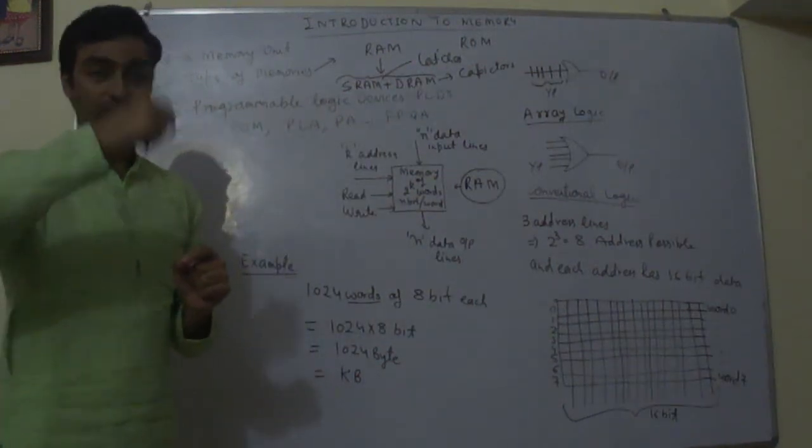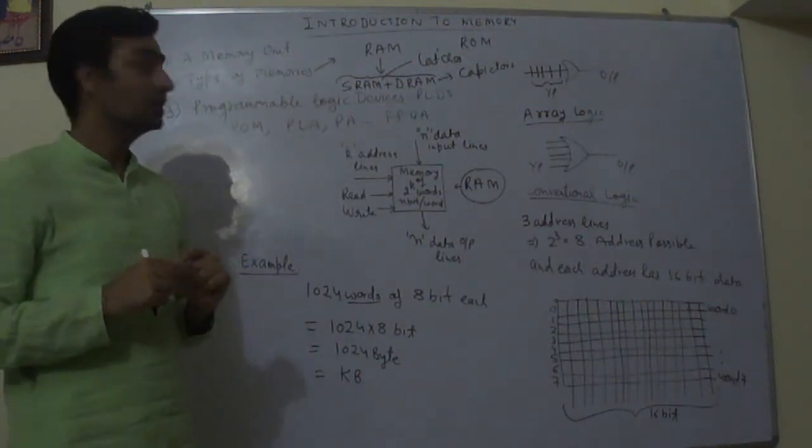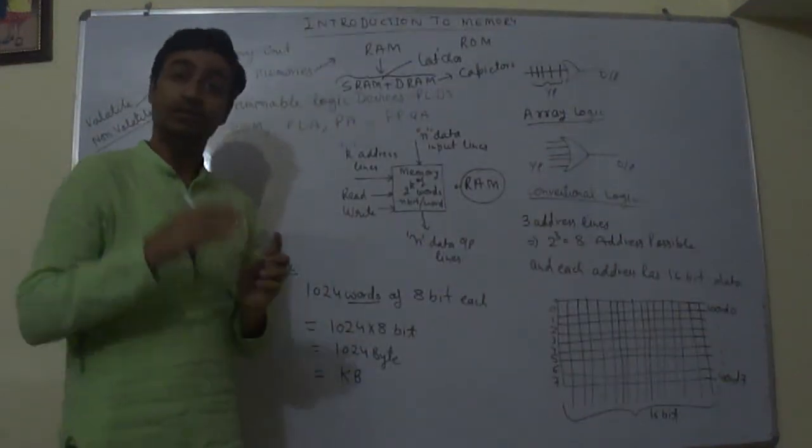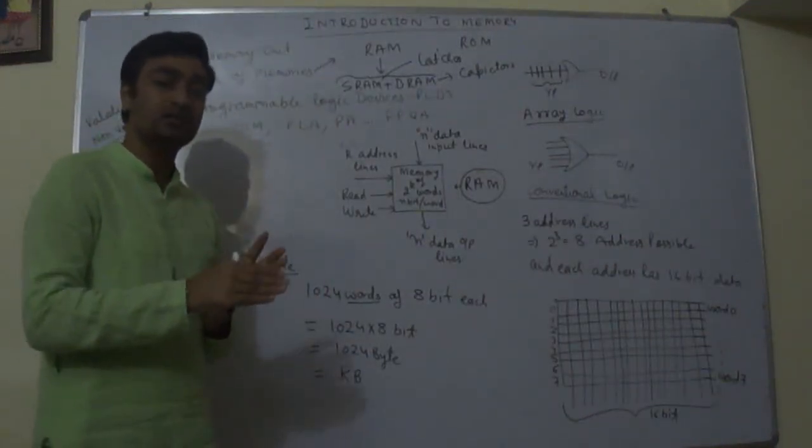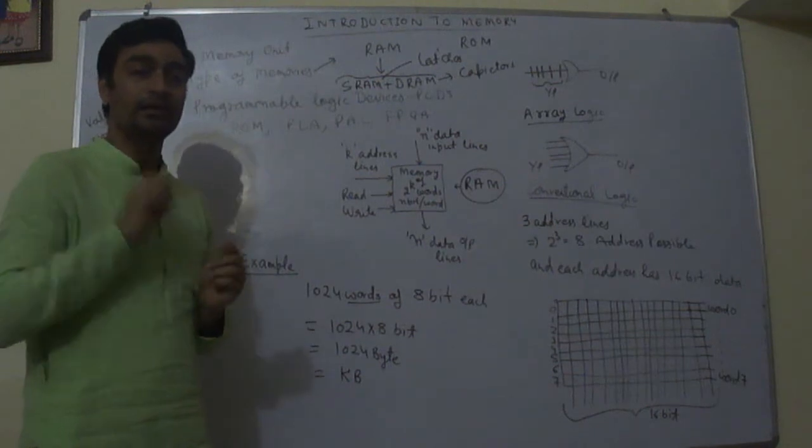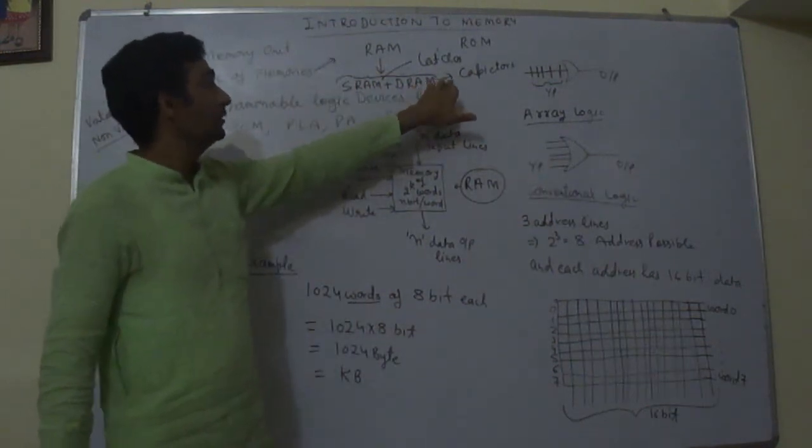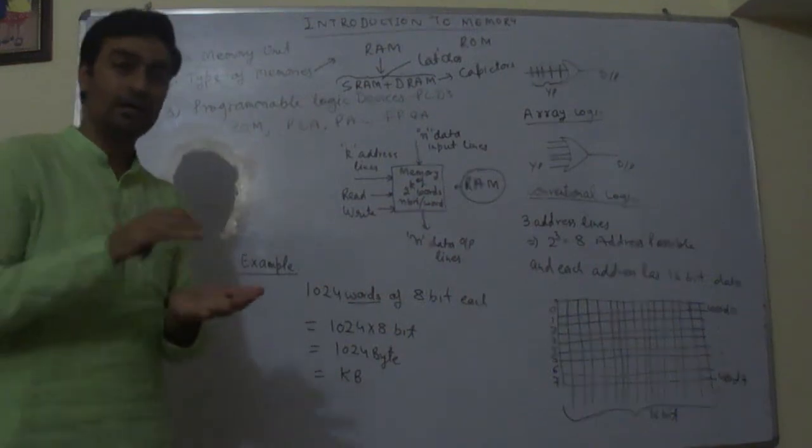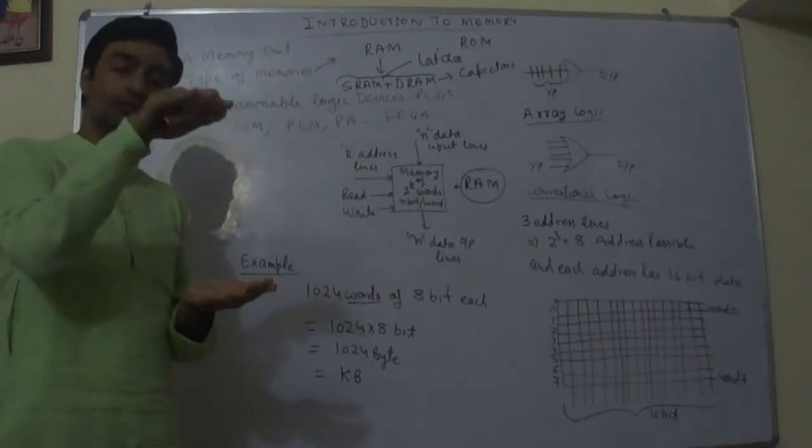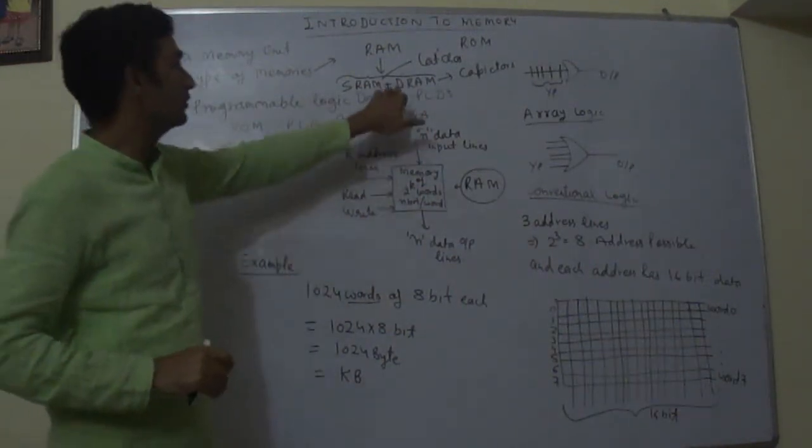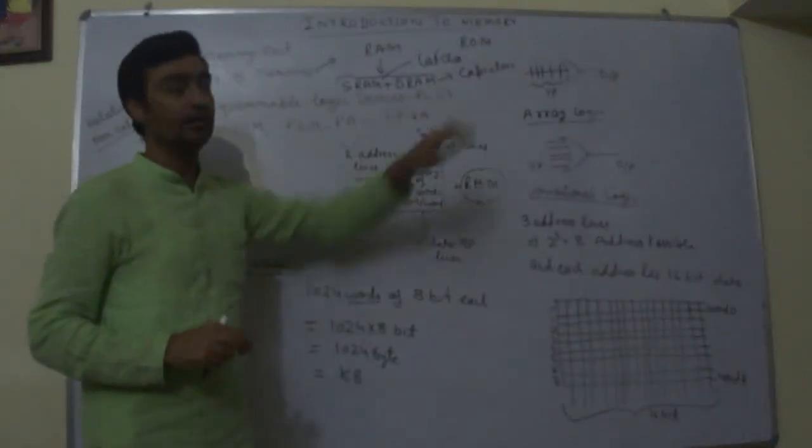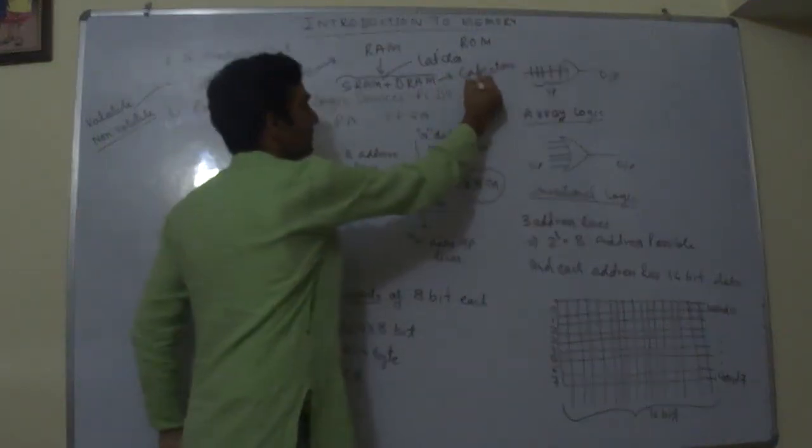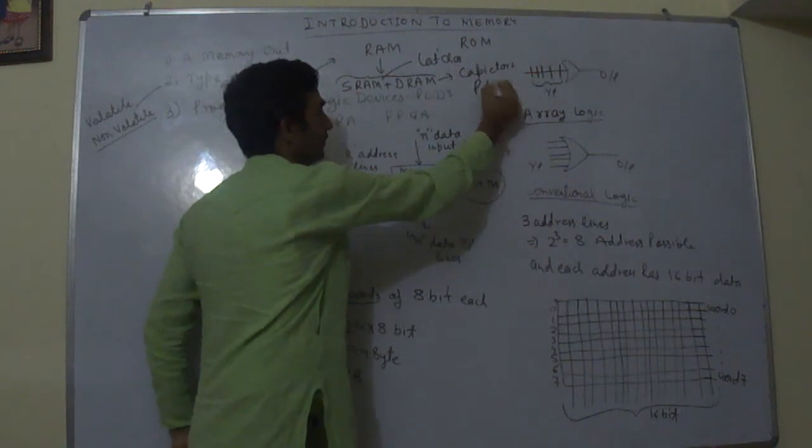Now DRAM requires regular refreshing of the memory because it contains the capacitor. With the passage of time, your capacitance decays, and because of that we need to refresh the memory again and again so that it recharges to the desired level. So DRAM requires refreshing again and again, but power consumption here is very low.